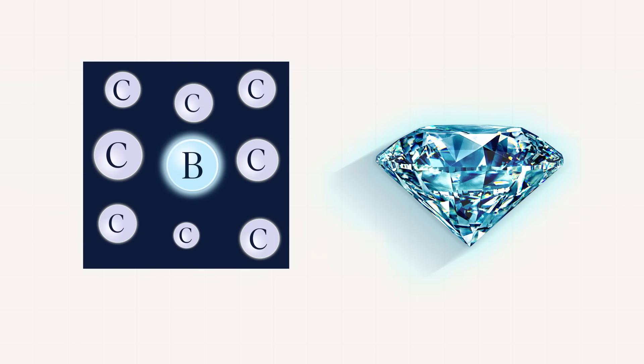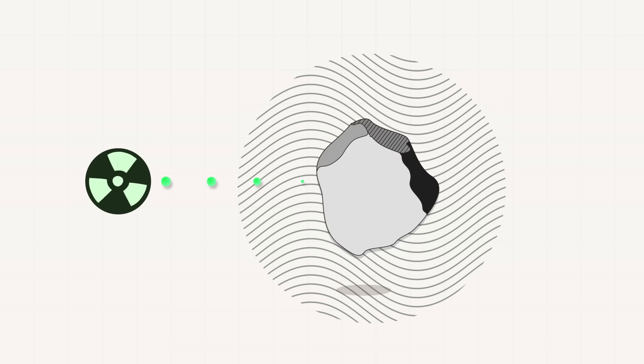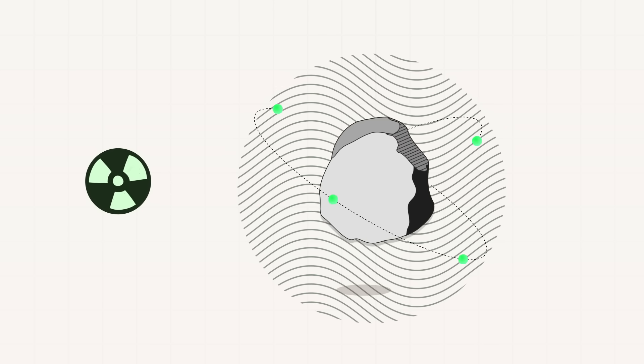while boron causes a blue or violet colour. At other times, natural diamonds can get their colour when their atoms get distorted, mostly as a result of exposure to radioactivity.